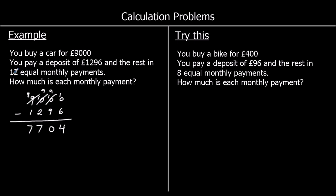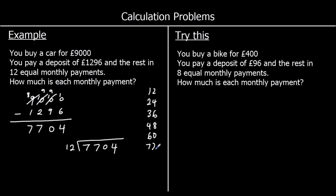We need to share £7,704 between 12 months. I'll write the 12 times table down the side to help. How many 12s go into 7? Zero, with 7 left over. How many 12s go into 77? Six — that makes 72, with 5 left over. How many 12s go into 50? Four, with 2 left over. And how many 12s go into 24? Two. So each monthly payment is £642.